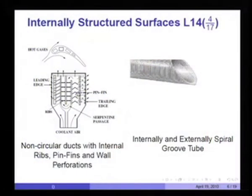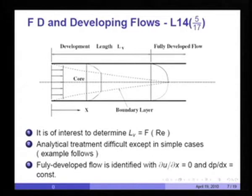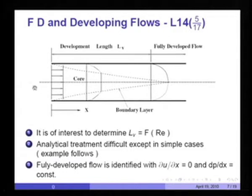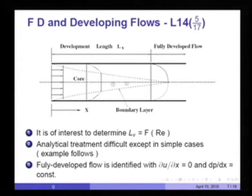Our interest here now is on laminar flows, although many practical applications are in the turbulent regime. We shall take up turbulent flow a little later, but let us concentrate first on laminar flow in a duct. Let us say the flow enters with a uniform velocity u-bar. As soon as it encounters the top and bottom wall, there will be viscous action and therefore boundary layer development. Inside the boundary layer, there will be a reduction in velocity from its initial value.